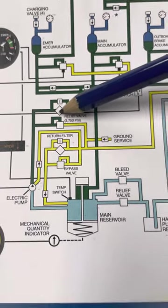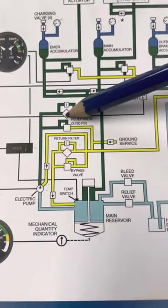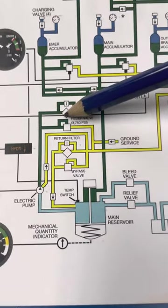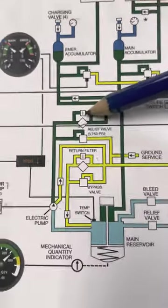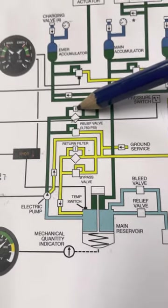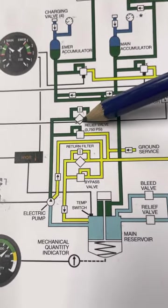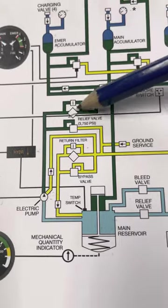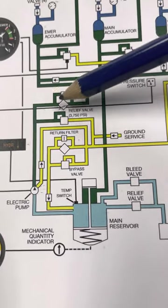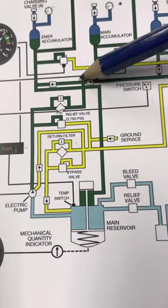At no point will a filter become clogged so much that it will not allow fluid to pass through the filter. There is always a bypass available. And based upon the pressure, it will allow that fluid to bypass to do its job. Once it's gone through the filter and it comes here, notice at this intersection that there are two one-way check valves.